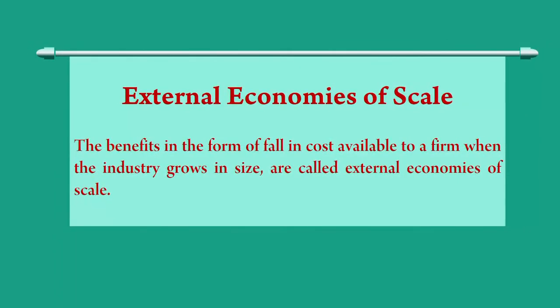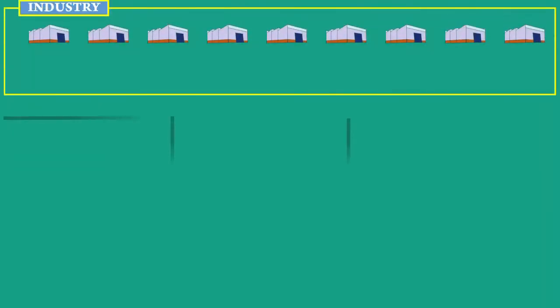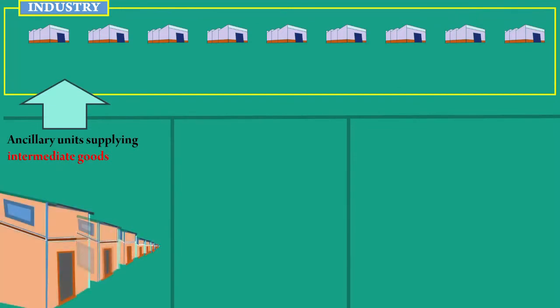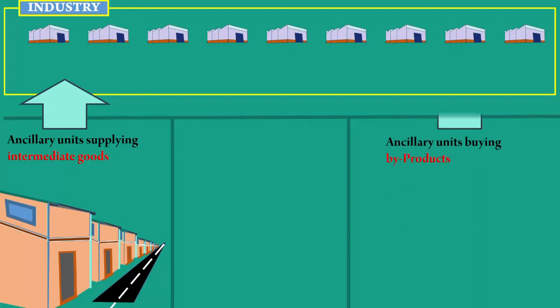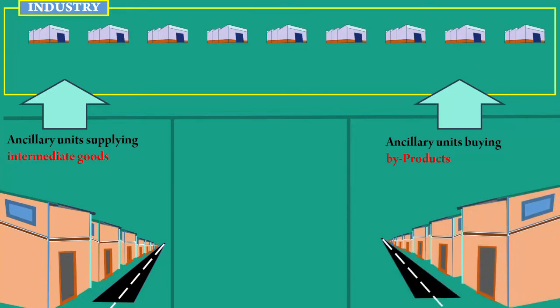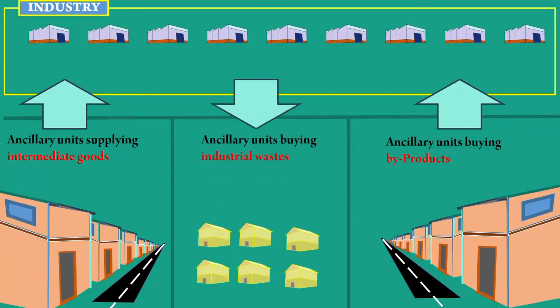For example, when the industry grows, a number of ancillary firms will come up and start supplying intermediate products at a competitive rate. Another group of units will be started to buy the by-products of the firm. Thus, the firms can convert the by-products into a source of fresh revenue. Moreover, new business units will turn up to buy the industrial waste for recycling, and the industrial waste also fetches some additional revenue to the firms. All these new activities enable the firms to produce the output at less cost.